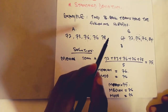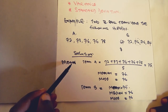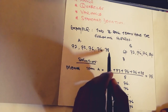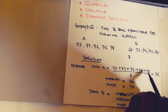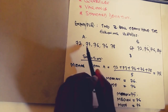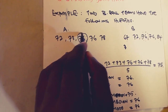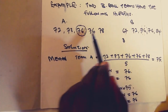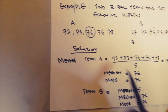Going through the solution for the mean of Team A: the mean is the summation of all data items divided by the total number of items. So we have 72 + 73 + 76 + 76 + 78 divided by 5, which gives us 75. That is the mean for Team A. The median — the middle number when arranged in order — is 76, since 76 is in the middle. The mode, the number that appears most, is also 76, as it appears twice while other numbers appear just once.